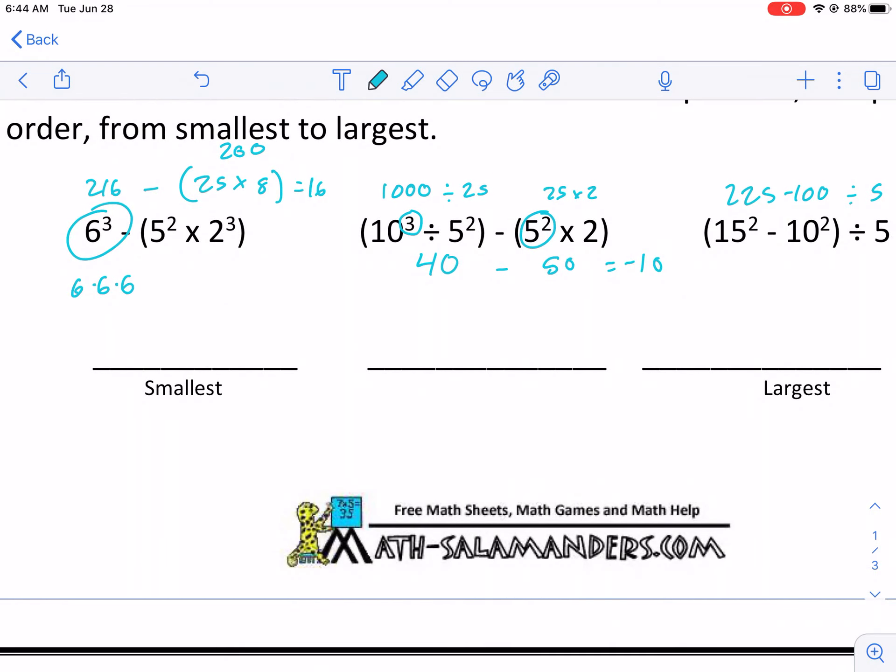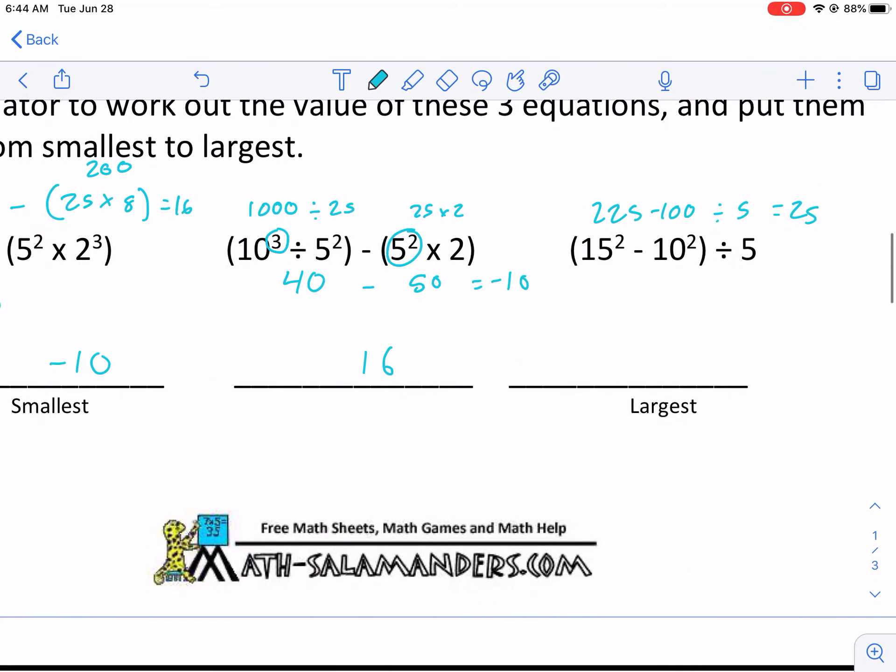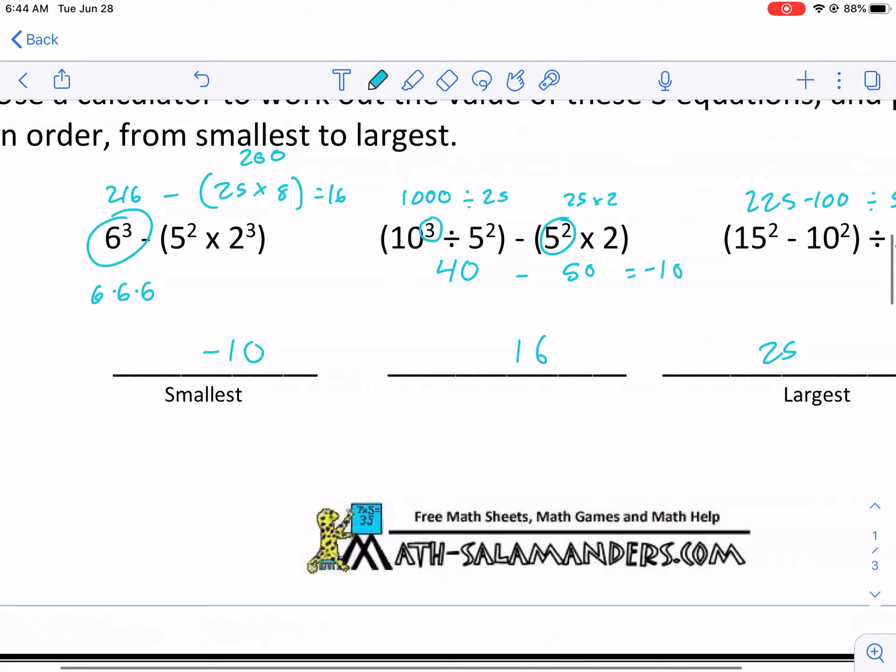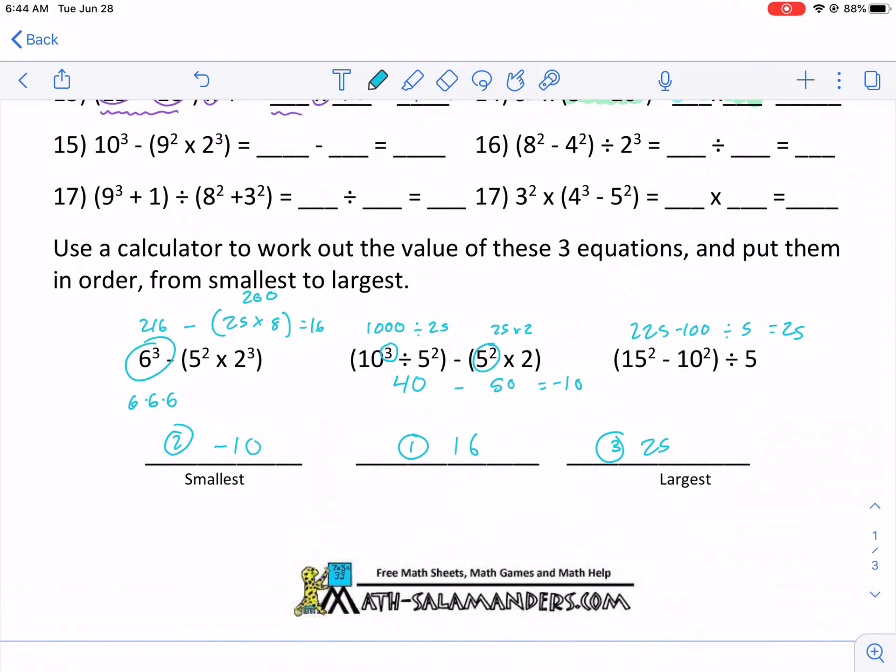So we could go ahead and write that answer. We have negative 10. Then we have 16. And then we have 25. So this was the first one. This was the second one. And this was the third one plops down for the largest expression. So that's all we have for this worksheet.